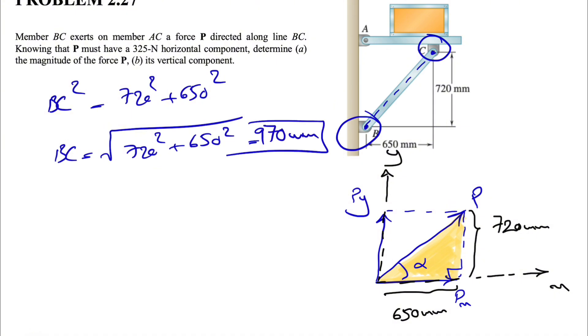We can do simple sine and cosine to figure out the force P. We already know that our horizontal component P_x is 325 Newton. It's easy enough to find the P from here, and we can find P_y after. We know that we have a pin at point B.